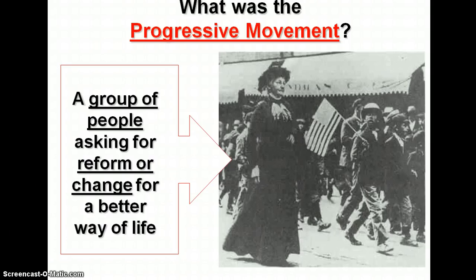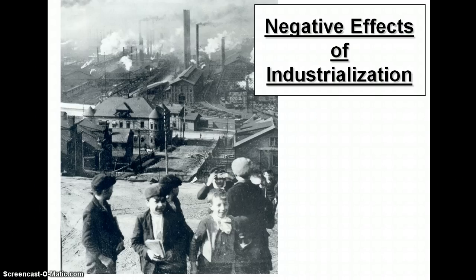What was the progressive movement? There were those who were trying to make progress — the good type — asking for reform or change for a better way of life. As we look at this Gilded Age, one of the problems is industrialization. I'm not going to tell you the answer, but I'm sure you could figure out what the negative effect of industrialization is.